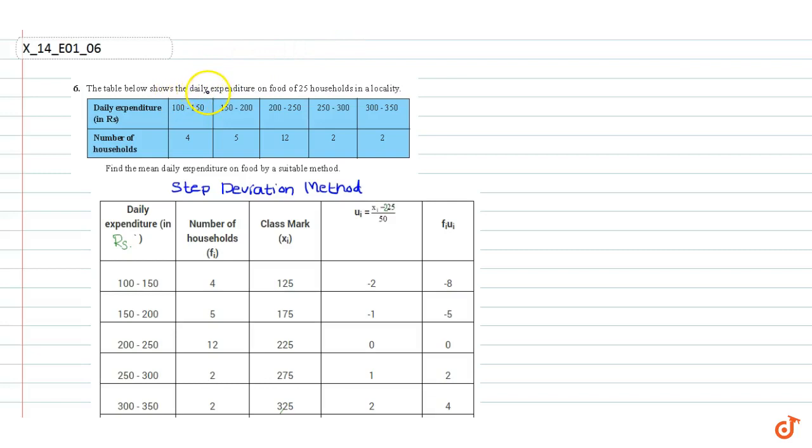In this question a table is given that shows the daily expenditure of food of 25 households in a locality. We have to find the mean daily expenditure on food by a suitable method. We will use step deviation method to solve this problem.